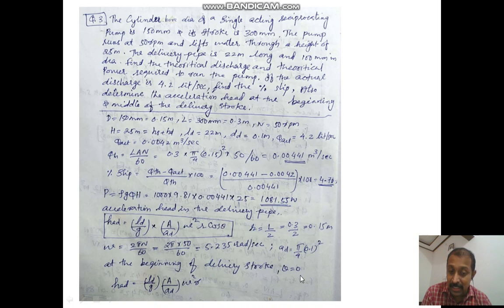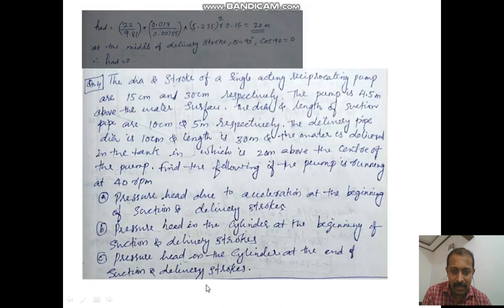At the beginning of the delivery stroke, theta equals zero. In this equation, cos zero is one, so we got h_a_d equals Ld by g times A by Ad times omega squared r. Substituting the values here, we will get 20 meters.